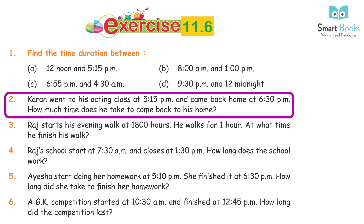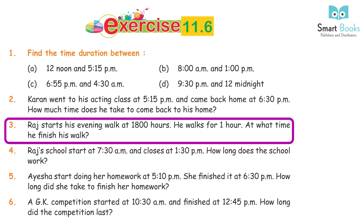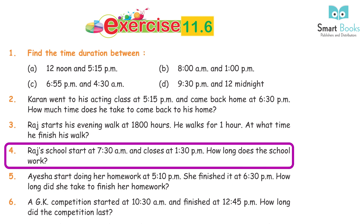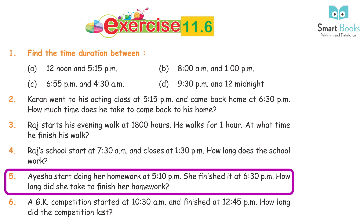Question 2: Karan went to his acting class at 5:15 PM and came back home at 6:30 PM. How much time did he take? Answer: 1 hour 25 minutes. Question 3: Rajat starts his evening walk at 1800 hours and walks for 1 hour. At what time does he finish? Answer: 1900 hours. Question 4: Rajat's school starts at 7:30 AM and closes at 1:30 PM. How long does school run? Answer: 6 hours. Question 5: Aisha starts homework at 5:10 PM and finishes at 6:30 PM. How long did she take? Answer: 1 hour 20 minutes.